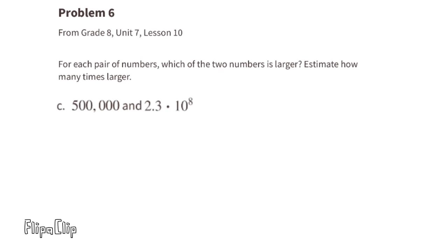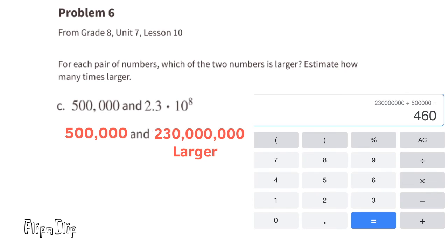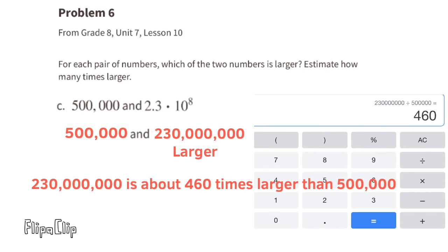Part C: 500,000 and 2.3 times 10 to the eighth power. These are equivalent to 500,000 and 230,000,000. 230,000,000 is obviously greater than 500,000. Since 500,000 is half the size of 1,000,000, then 230,000,000 would be 460 times larger than half a million. That means that 2.3 times 10 to the power of 8 is 460 times greater than 500,000.